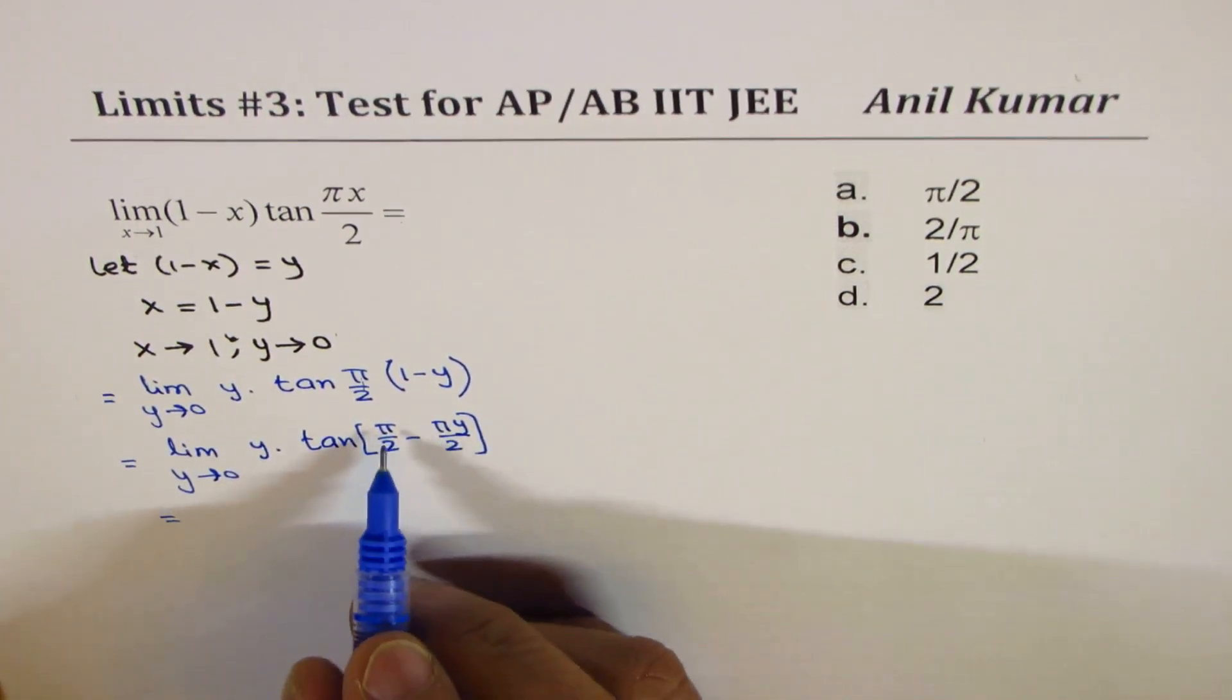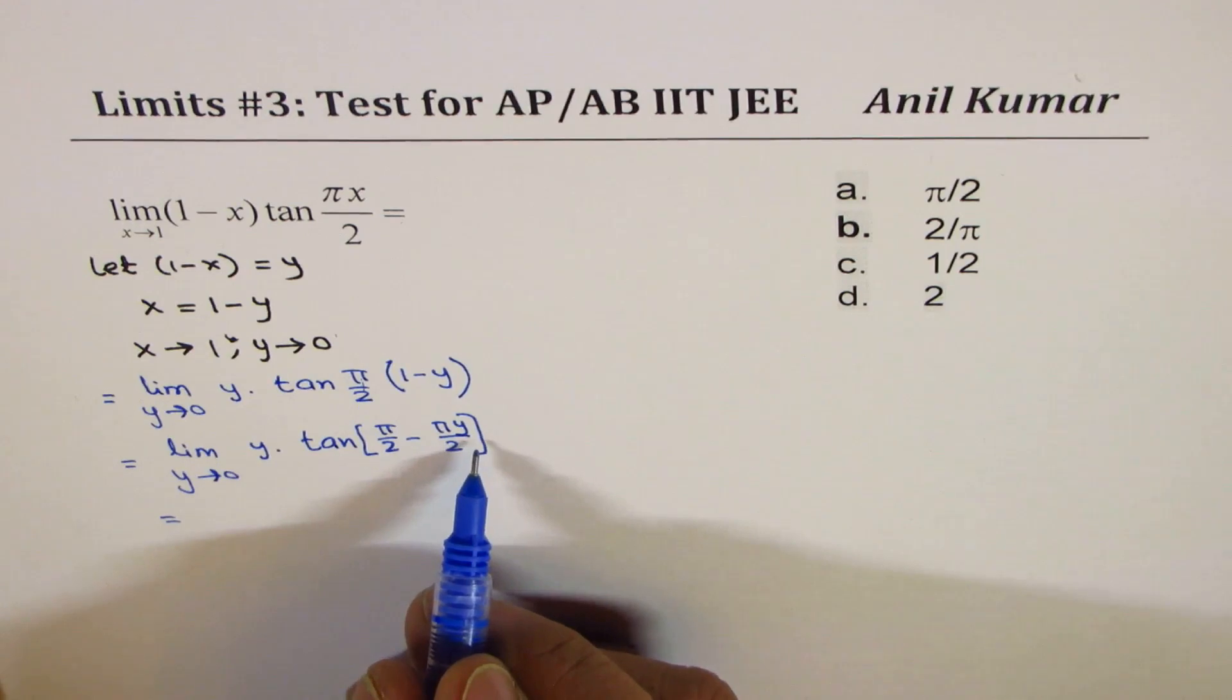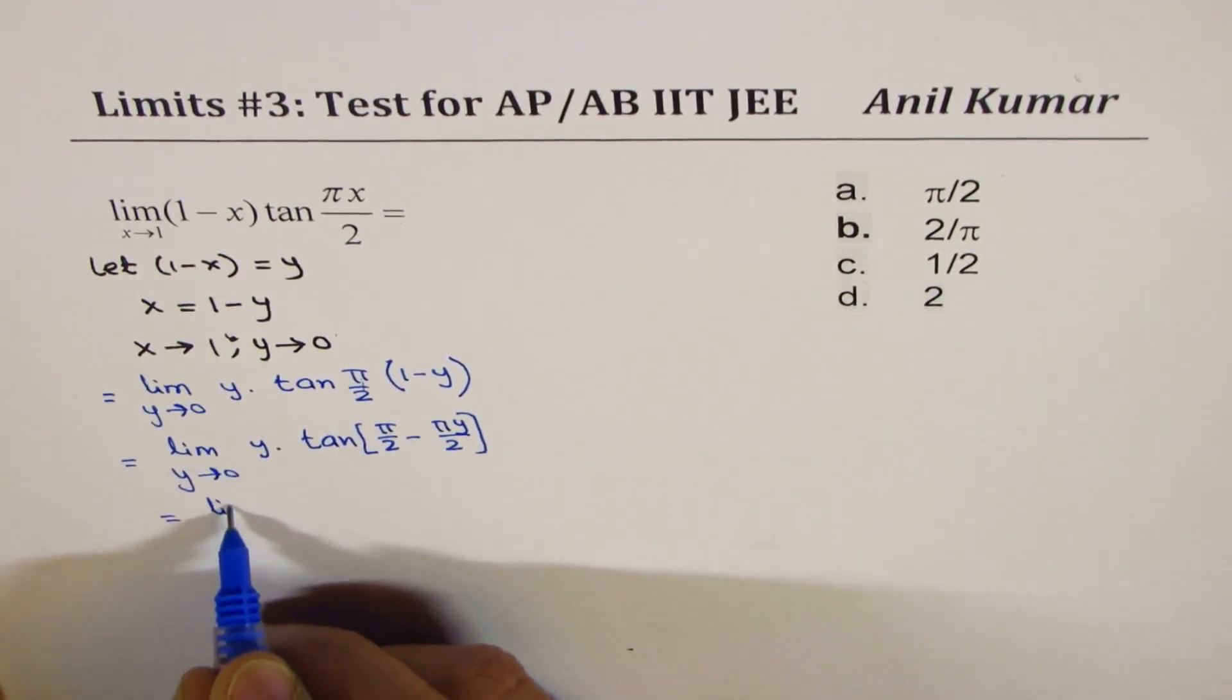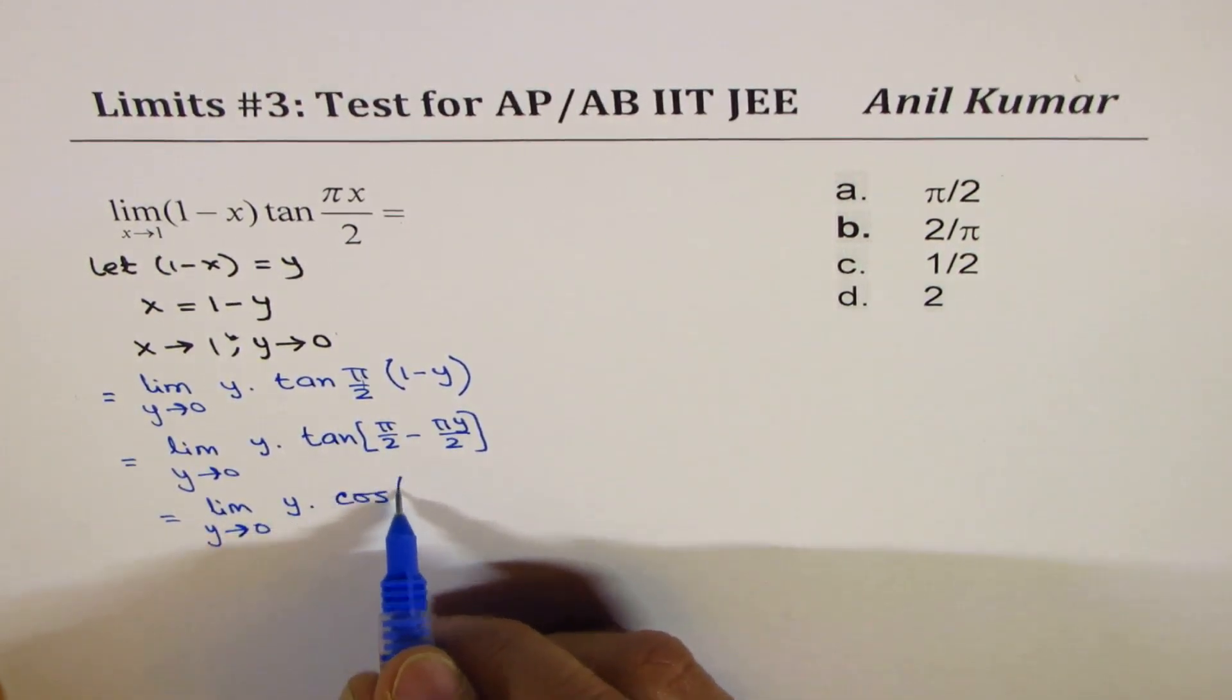Now what is tan pi by 2 minus theta? It is cotangent. So we get limit y approaches 0, y times cot of pi y by 2.